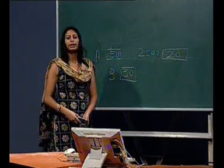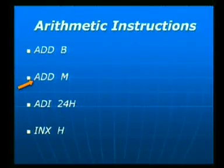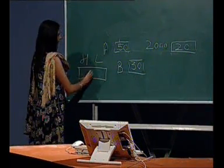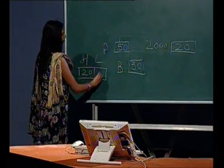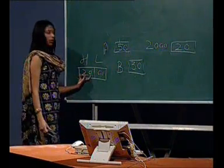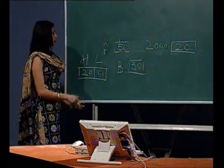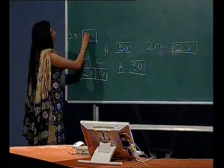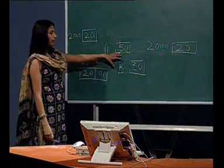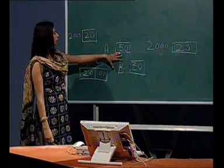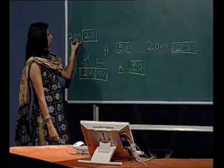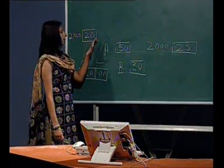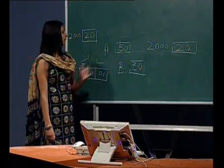Next is ADD M. In this case, it will take the data from the HL pair. If 2000 is specified in the HL pair, it will check memory location 2000. If the data in location 2000 is 20 and the contents of the accumulator are 50, after execution of this instruction, it will add the contents of memory location 2000 with the accumulator. After execution, the result will be 50 plus 20, that is 70, and this 70 will be stored in the accumulator.